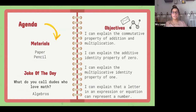I can explain the commutative property of addition and multiplication. I can explain the additive identity property of zero. I can explain the multiplicative identity property of one. And I can explain that a letter in an expression or equation can represent a number.